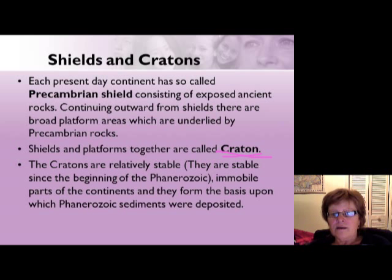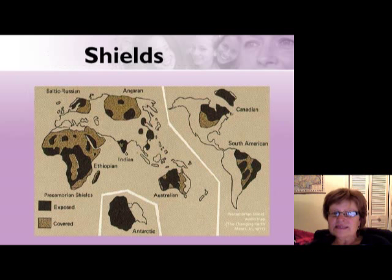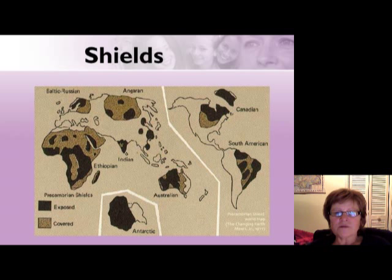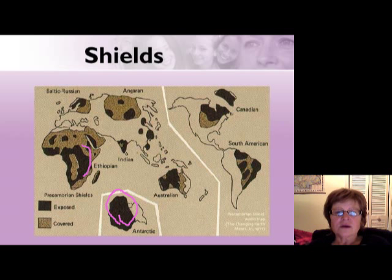Here is a map showing the shields of each continent. As you can see, every single continent has one — even Antarctica has a big Precambrian shield. The dark brown areas are exposed shield rocks, and the light brown areas are covered by younger sediments.